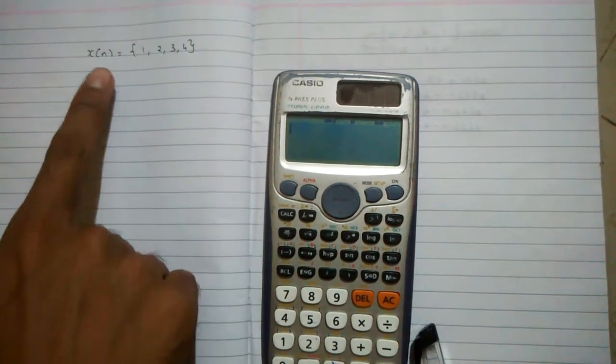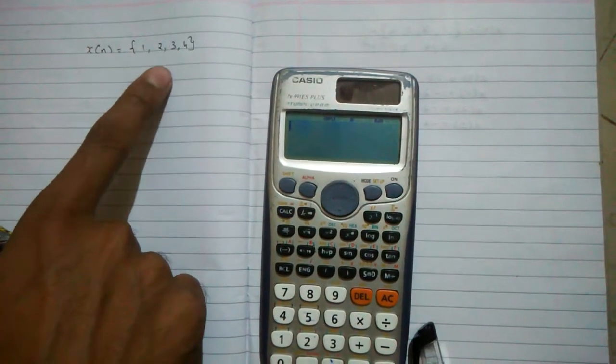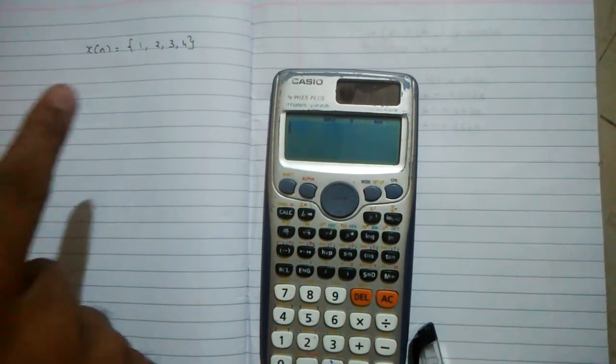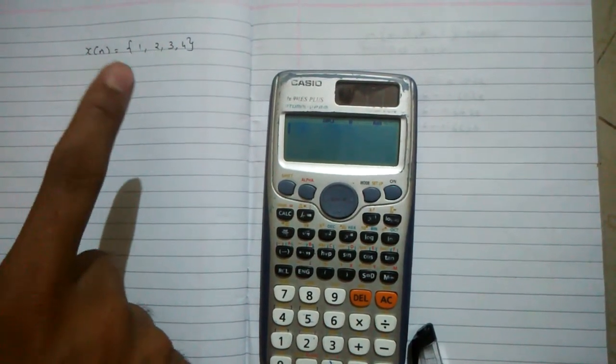For this video, let's take an example of x equals 1, 2, 3, 4. We will see how to calculate a 4 point DFT for this.